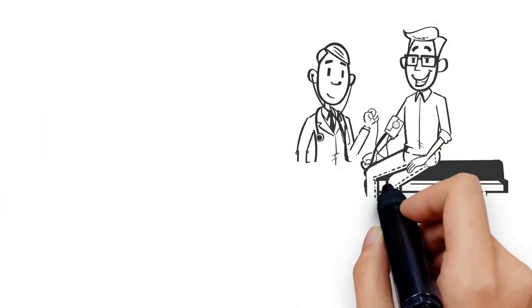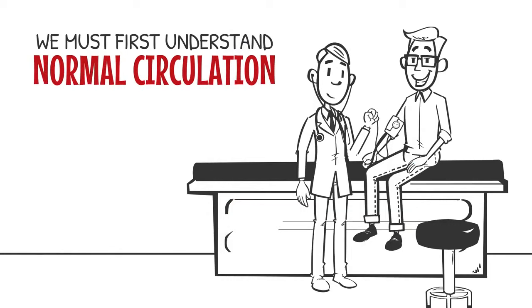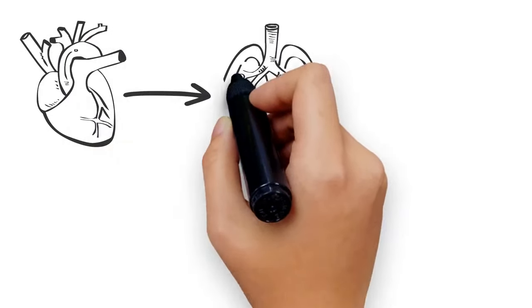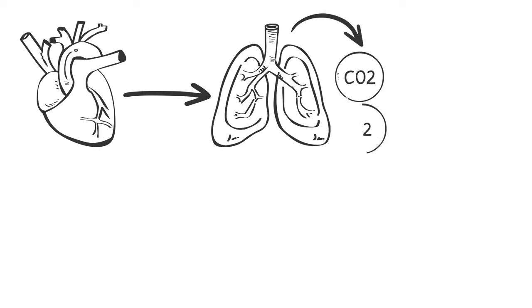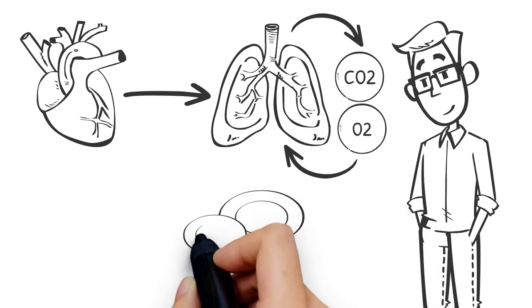To fully understand the benefits of hyperbaric oxygen, we must first understand normal circulation. Our heart pumps blood to our lungs, where carbon dioxide is exhaled and oxygen is inhaled. Oxygen enters our body through our lungs, attaching itself to our red blood cells.